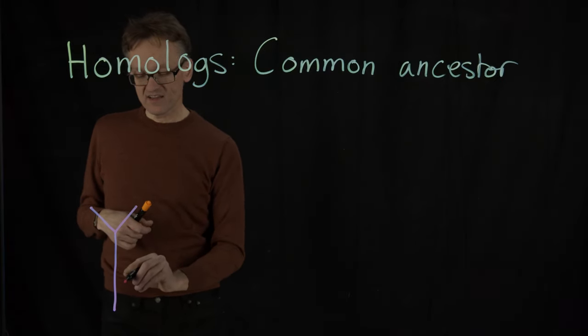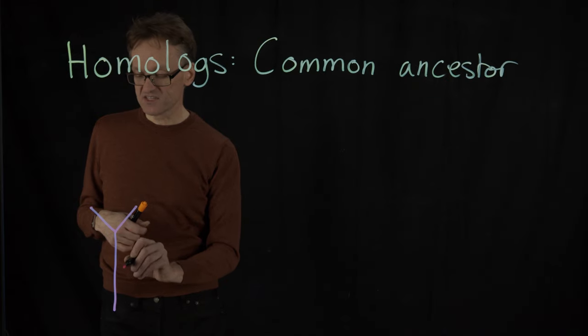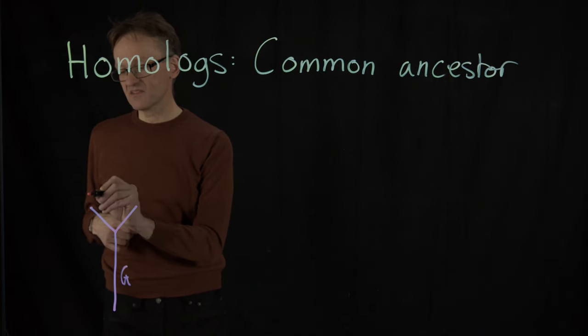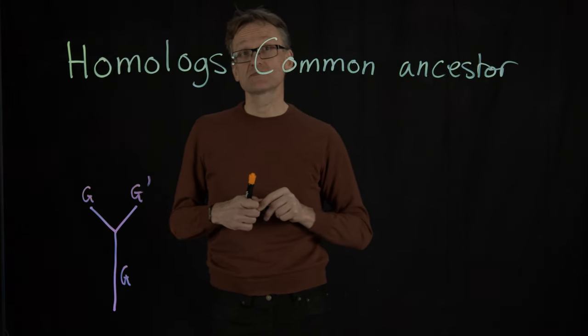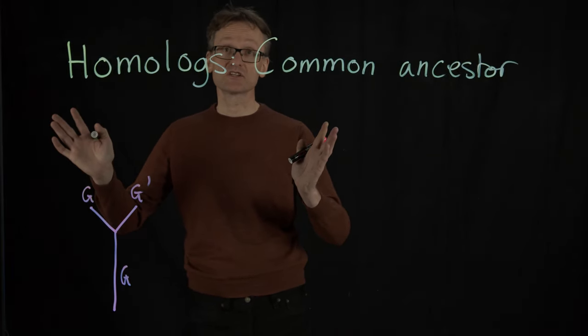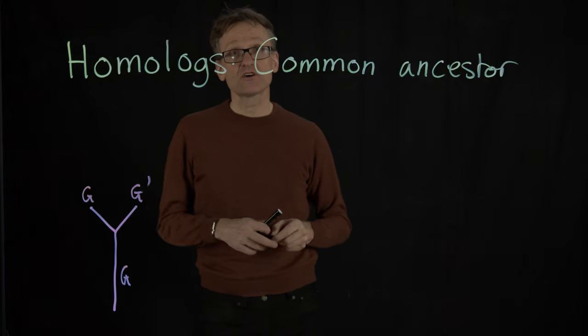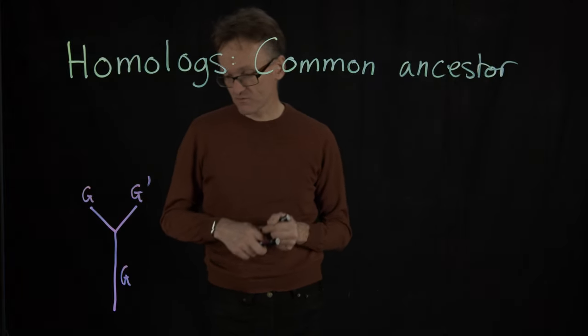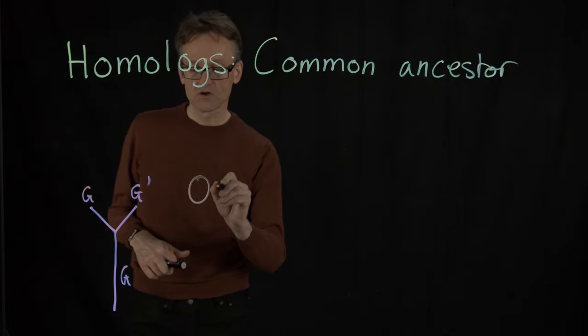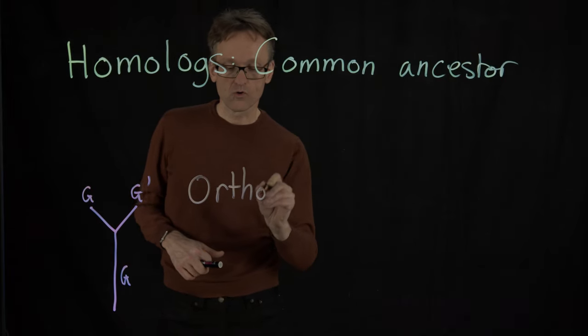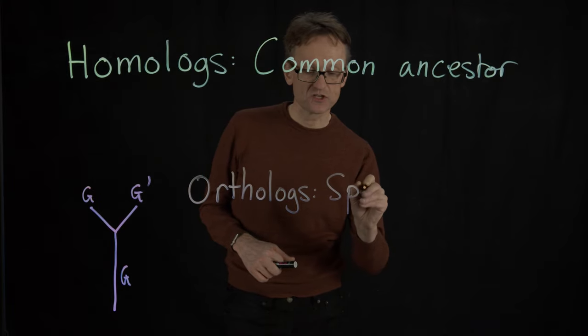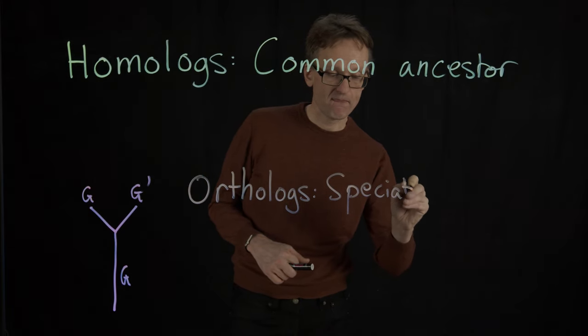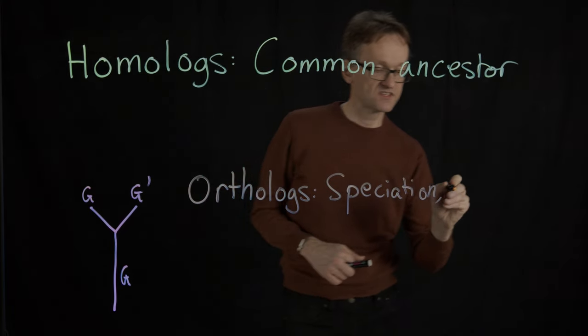Now if I happen to have a protein here, or a gene—let's say it's called G—then I might have G here and G prime here. One of them has changed. Again, they end up in different species. When things are in different species, we call them orthologs. It's due to speciation, but they have the same function.